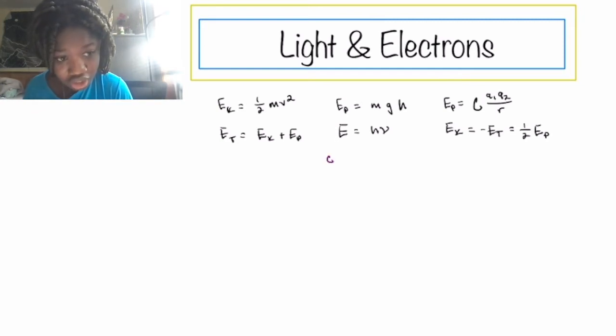c equals lambda times nu. Now c, in this case, is the speed of light.